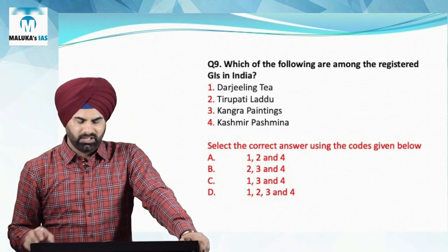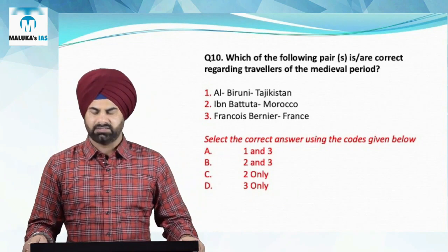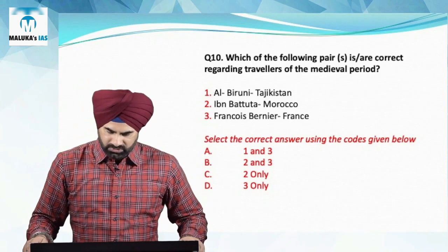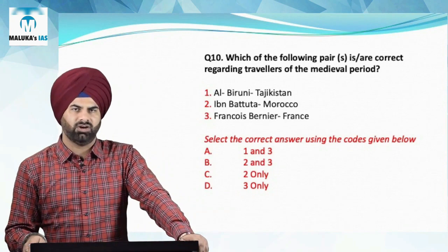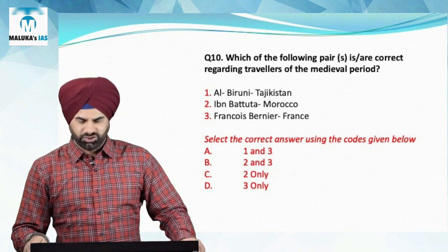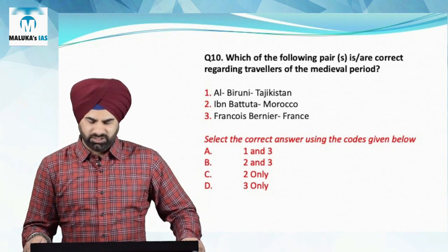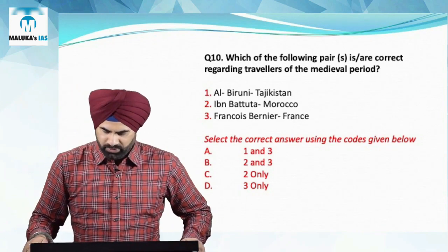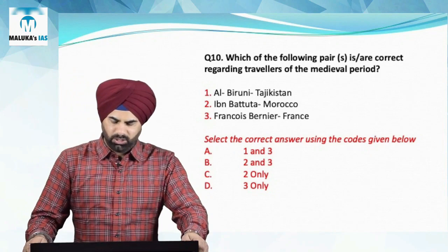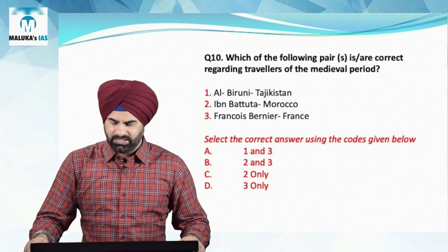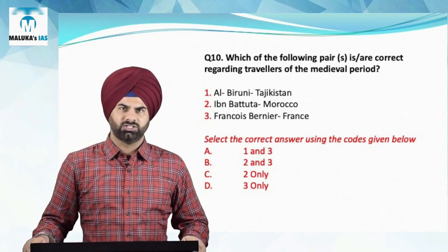Therefore for question number nine, all four are correct and D becomes the answer. For the last question — which pair is correct regarding travelers of medieval India — Al-Biruni came from Uzbekistan, not Tajikistan, during the 11th century, so the first pair is wrong. Ibn Battuta came from Morocco during the 14th century — correct. Francois Bernier came from France during the 17th century — correct. Therefore second and third are correct and D becomes the answer for question number ten. Thank you for watching this video.